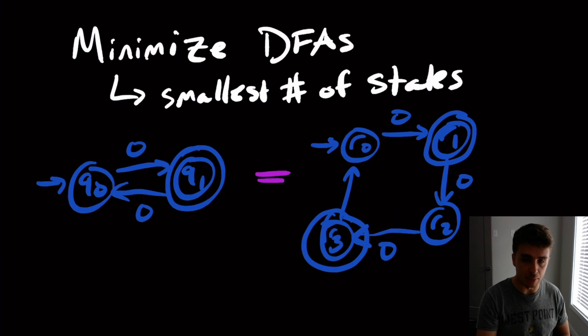So in fact, these two DFAs recognize the exact same language. This one recognizes the same as this one. But clearly this one is smaller. So is there a way that we can transform this guy into this guy? So it turns out that it's possible.